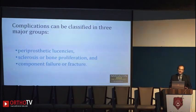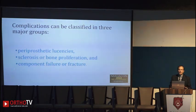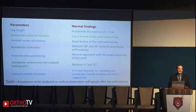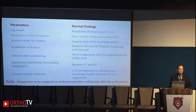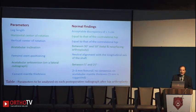Some complications seen with total hip replacement — like periprosthetic lucency, osteolysis, sclerosis, component failure such as fracture and dislocations, or periprosthetic fractures — can very well be seen on X-rays. A key parameter is limb length: less than 1 cm discrepancy is acceptable. This is important because we must counsel patients, as it is one of the most important causes of medico-legal complications. Patient education preoperatively is very important to avoid such issues postoperatively.